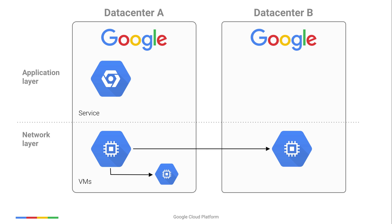Next, we encrypt at the application layer, or layer 7. Google's infrastructure provides authentication, integrity, and encryption of remote procedure calls from service to service when those calls leave a physical boundary controlled by Google.